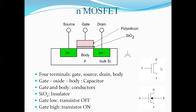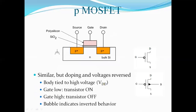The symbol shows the drain terminal, source terminal, and gate terminal. A second symbol includes the body or substrate terminal, and the arrow direction shows the direction of current flow in the MOSFET. When we apply a low gate voltage the transistor turns off, and when we apply a high gate voltage the transistor turns on. The P-type MOSFET is similar to the N-type but the doping levels differ and the voltages are reversed.